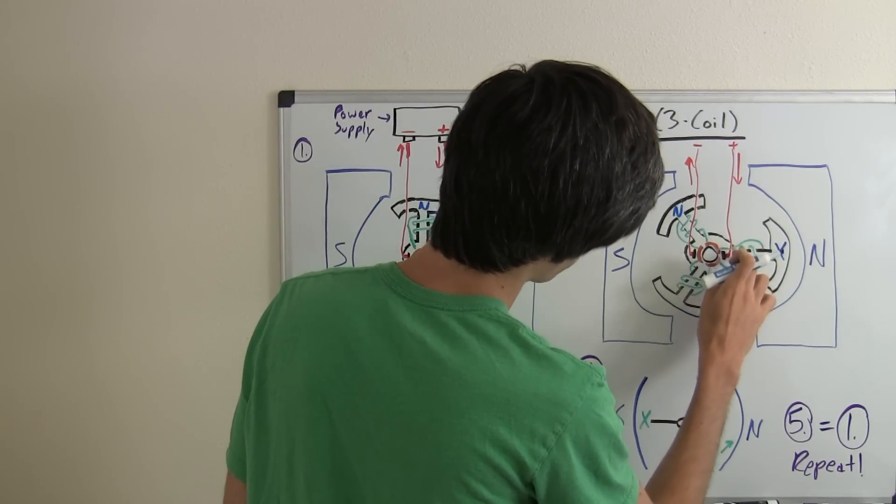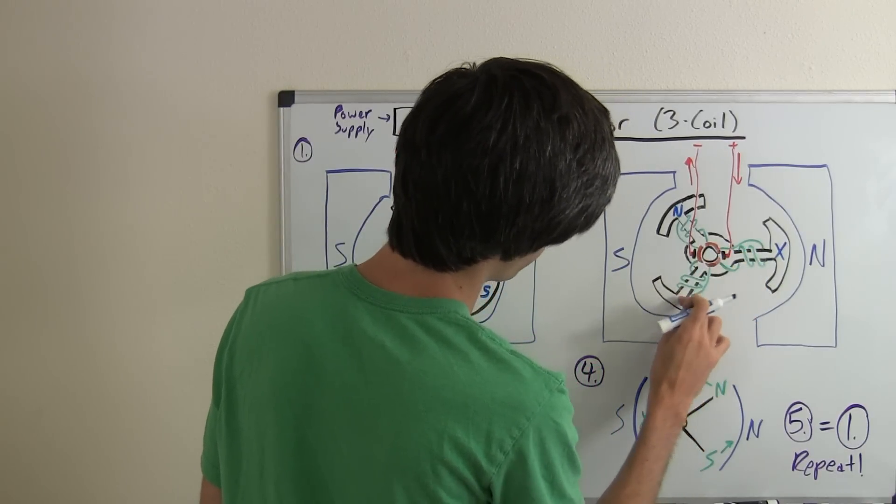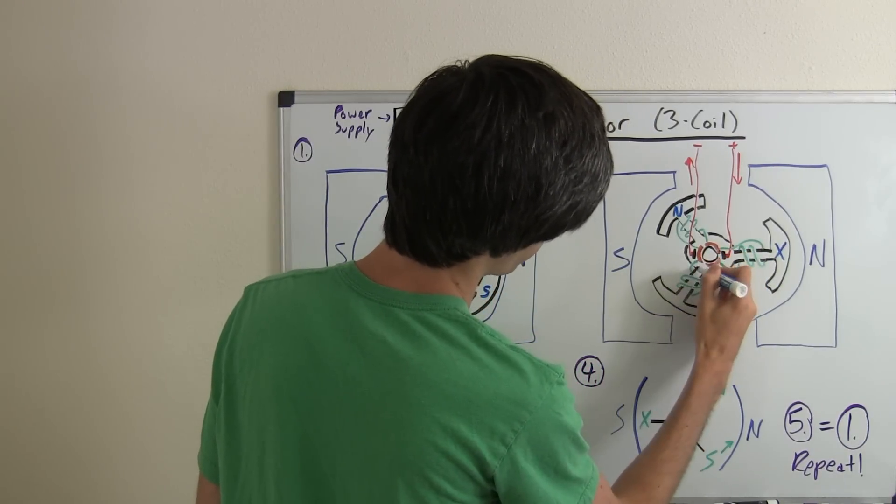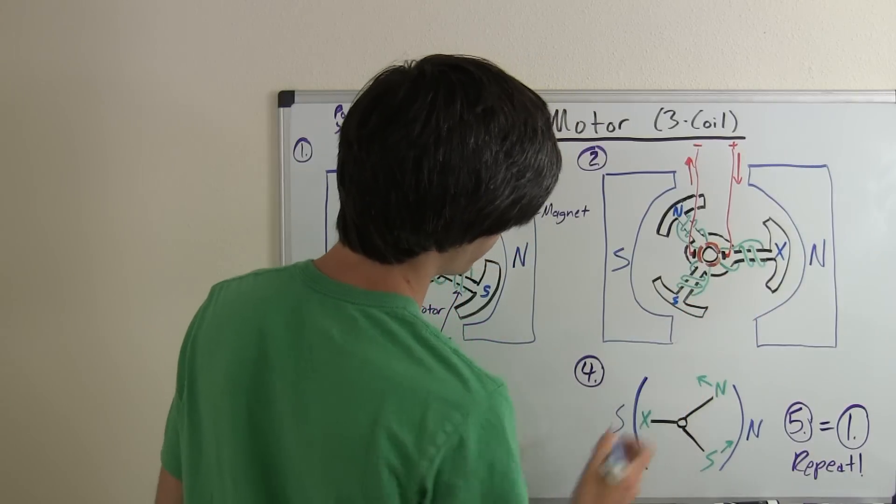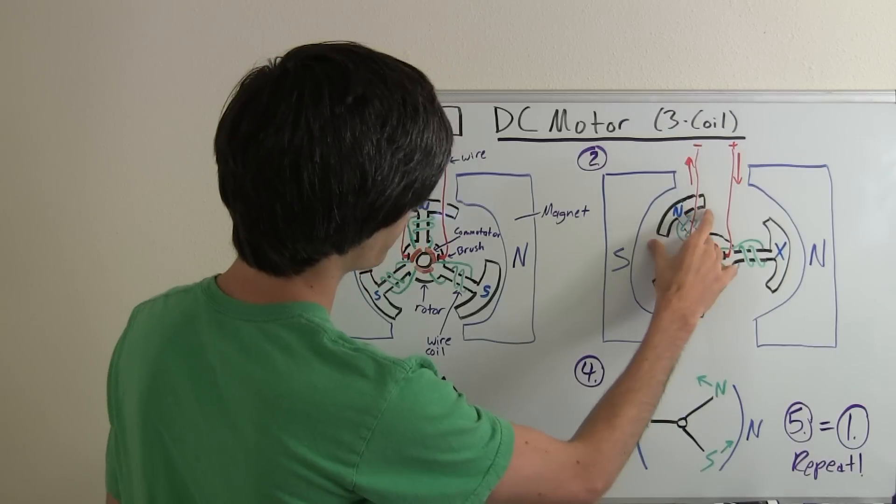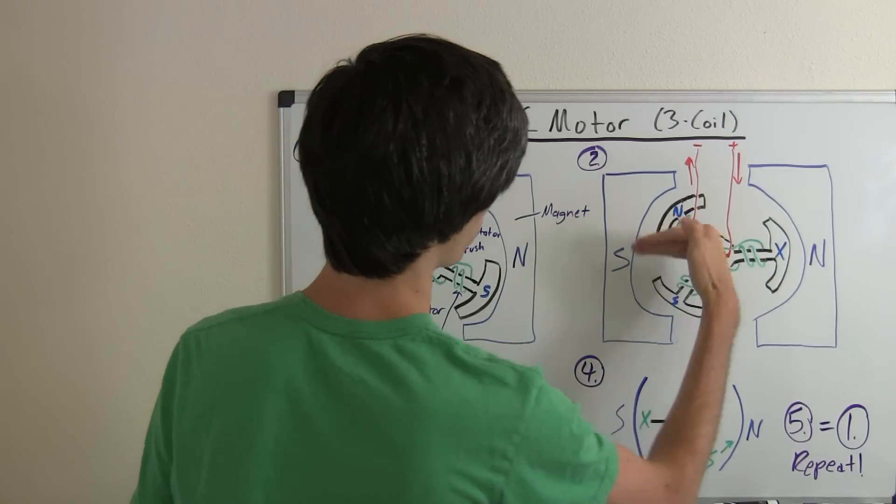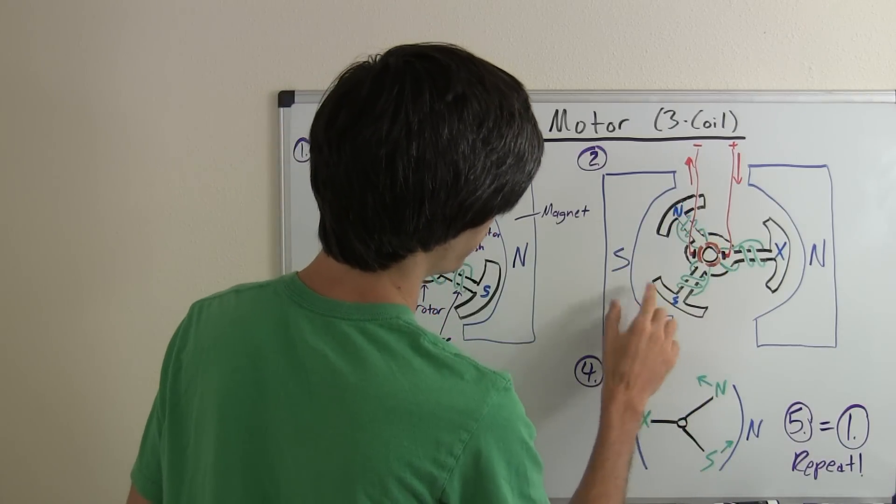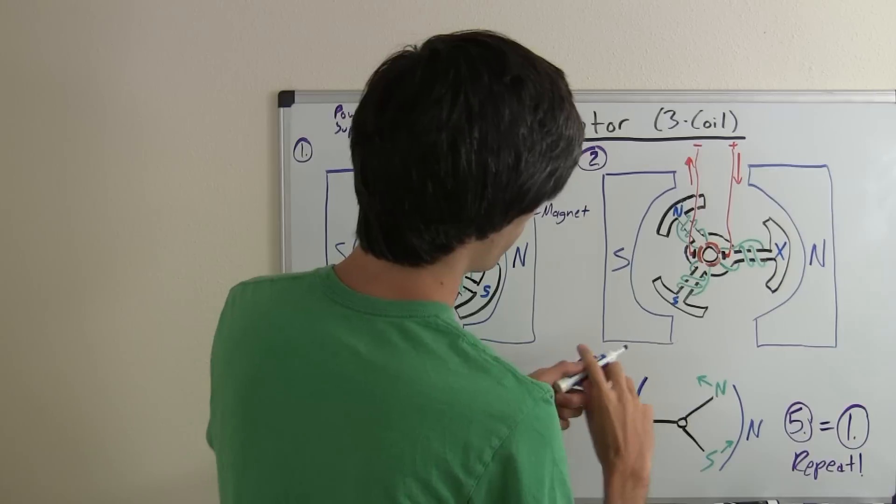And then the other direction when it travels from this one it's going to go up to the top and then travel down. So it'll create a north pole there creating a south pole there. Okay so you've got the north here attracting to the south so that'll cause it to rotate that way. The south repelling from the south that'll cause it to rotate this direction.